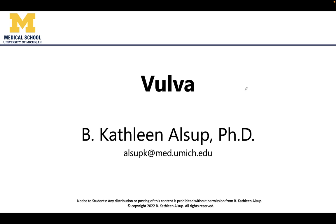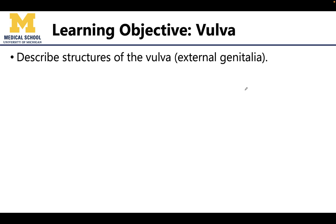Hello anatomy colleagues, this is Dr. Alsup. In this learning objective video we will be discussing the vulva, or the external genitalia typically associated with an individual assigned female at birth. There are seven structures that we will be discussing, focusing mainly on describing the location and composition of these structures.